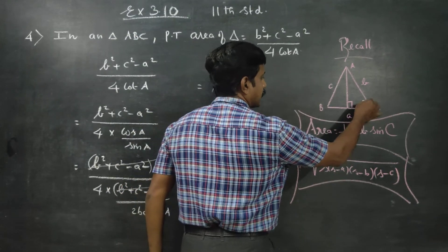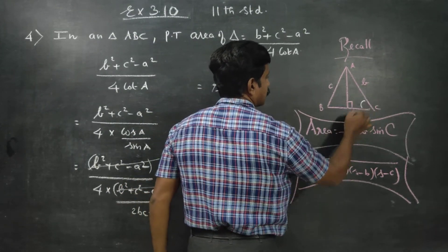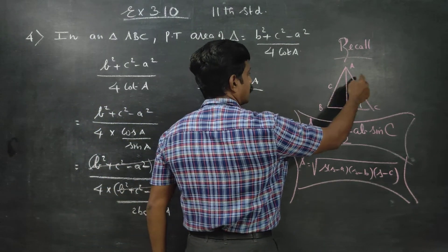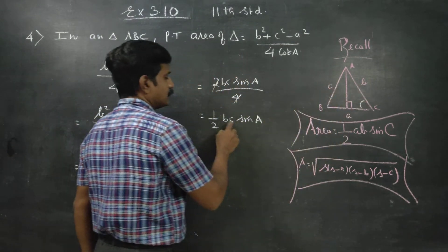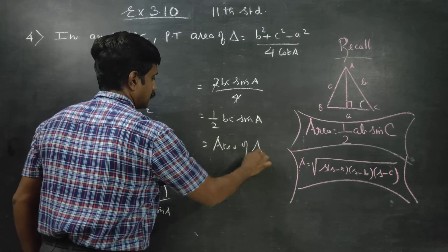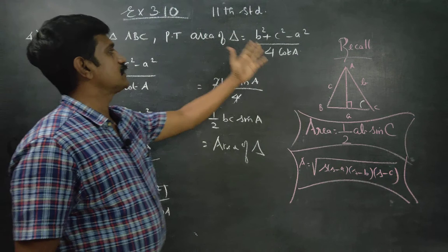C angle, included sides are A and B. A is coming, included angles are B and C. This is the area of triangle.